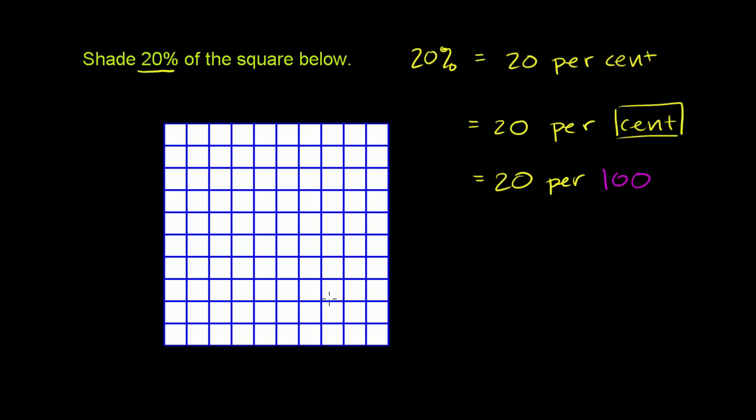So how many squares have they drawn here? Let's see, if we go horizontally right here, we have 1, 2, 3, 4, 5, 6, 7, 8, 9, 10 squares.